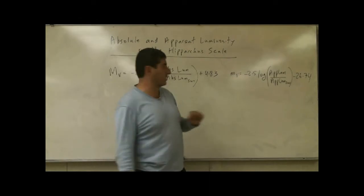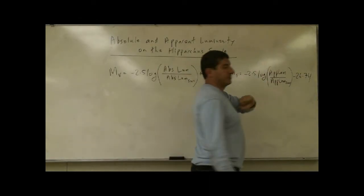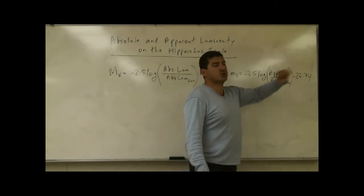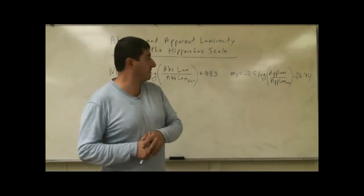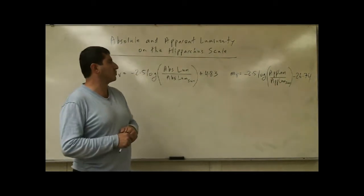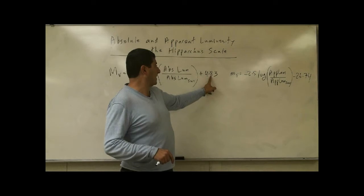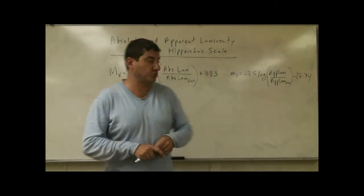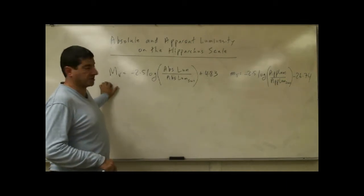The apparent visual magnitude, also MV, is negative 2.5 times log of the apparent luminosity of a star divided by the apparent luminosity of the sun, minus 26.74. As we continue in this video and in subsequent videos, you will understand why and how the constants 4.83 and negative 26.74 come about. This is the absolute luminosity of a star on the Hipparchus scale.